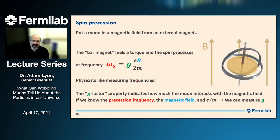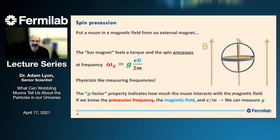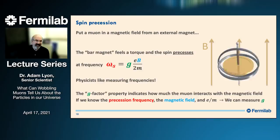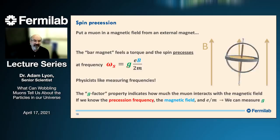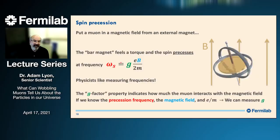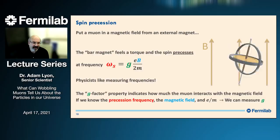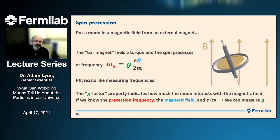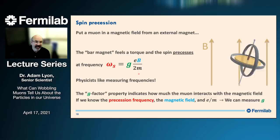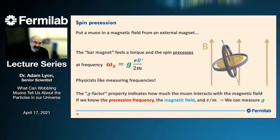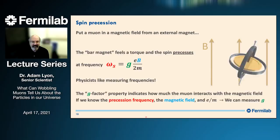The G-factor is a property of the particle — it says how much that particle interacts with the magnetic field. If G is really small, the precession will be really slow. If G is really big, the precession frequency will be really fast. So this measures the strength of how well a particle feels a magnetic field. If we can measure the precession frequency — and physicists can measure frequencies really well — and if we know the strength of the magnetic field, then we can measure what this G-factor is. That's in fact what we've done.